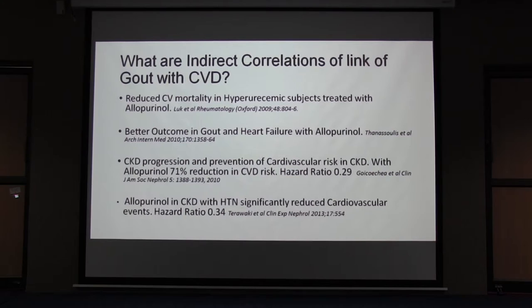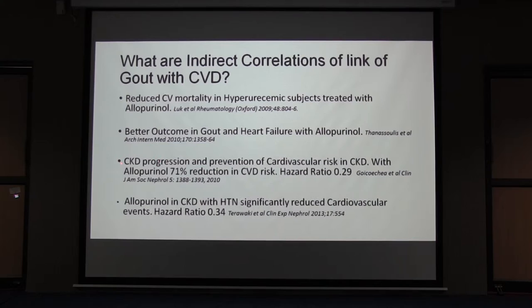What are the indirect correlations? The main indirect correlation linking gout with CVD today is that if you treat gout patients with allopurinol, there is reduced CV mortality, better outcome in heart failure, CKD progression is reduced, cardiovascular risk in patients with chronic kidney disease is reduced, and hypertension is also reduced — with hazard ratios as low as 0.29, which shows that allopurinol definitely works.